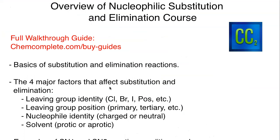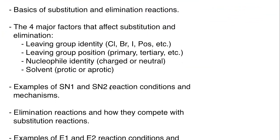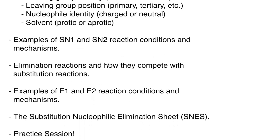So what are we going to talk about in this particular course? Number one, we're going to go over the basics of substitution and elimination reactions, broken down into four major parts. First is leaving group identity — so when you look at a leaving group: chlorine, bromine, iodine, tosylate. Second is leaving group position — primary, secondary, or tertiary, where the leaving group is located on the substrate. Third is nucleophile identity — whether a nucleophile is charged or neutral, and which atoms make better nucleophiles. Fourth is solvent, which tends to be where students get most lost.